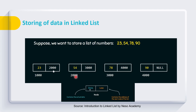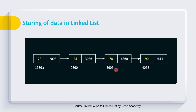So in this case the address of the next data item is 2000, so we are storing 2000 here. In case of the second node, the address of the next node is 3000, so we are storing that address. These addresses help us to make connections between these different nodes.